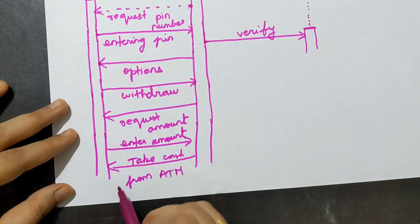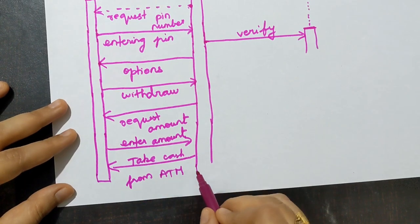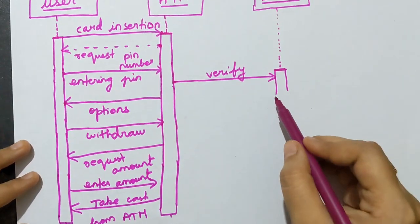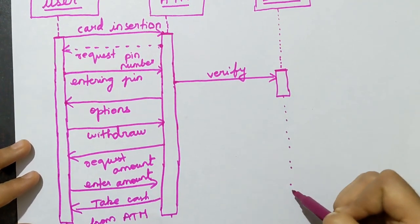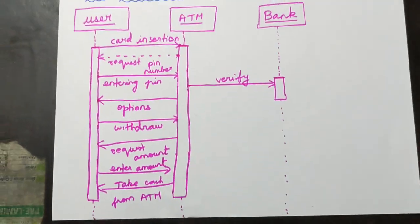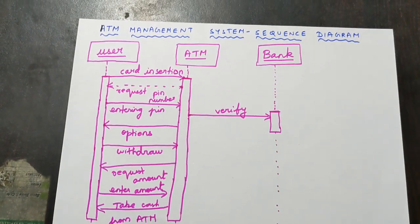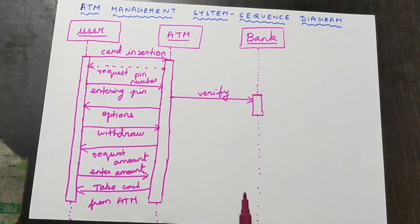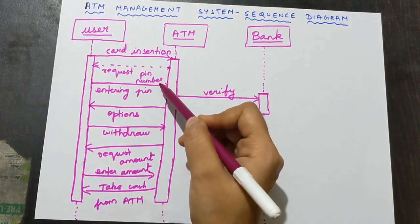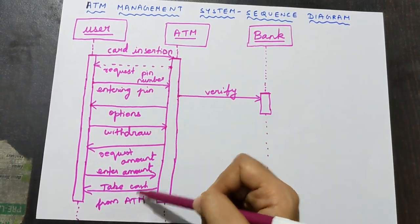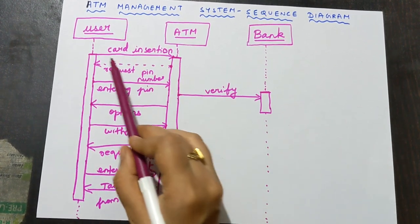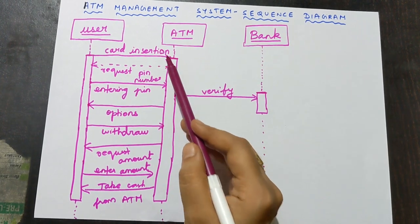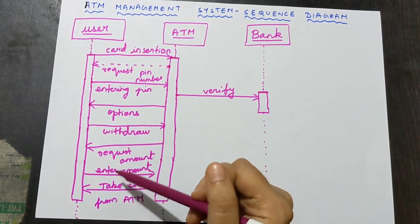After the process is completed, close the activation boxes and put dotted lines going down for each object. This is the final sequence diagram for the ATM management system. All arrows are at different positions because the arrow represents time, and on top of every arrow we have written the step. Each step takes place at a different time — no two steps can take place at the same time.